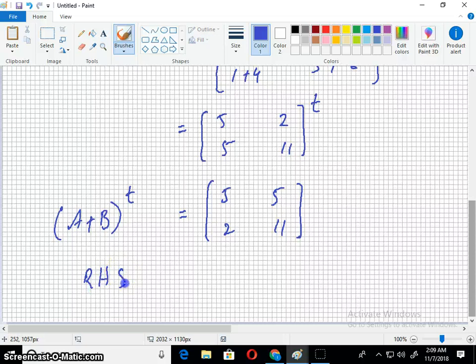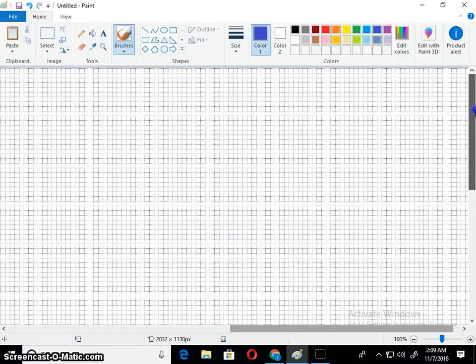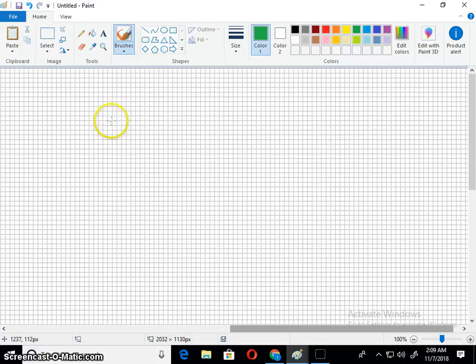Now this is your right hand. Now taking right hand side. So right hand side is Aᵀ + Bᵀ. So let's find the transpose. So A is [2, 4; 1, 5]. Its transpose plus B is [3, -2; 4, 6].